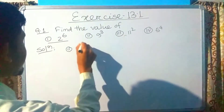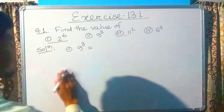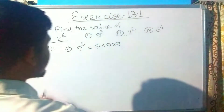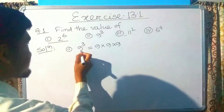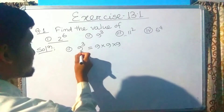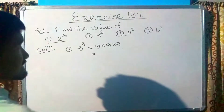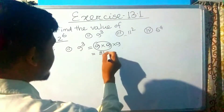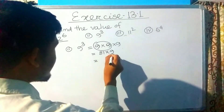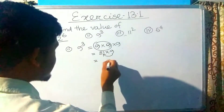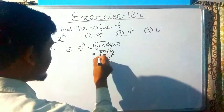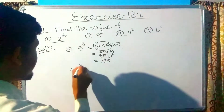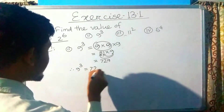Number 2 is 9 cubed. 9 cubed means 9 multiplied by 9 multiplied by 9. The power is 3 and the base is 9, so 9 will be multiplied 3 times. 9 multiplied by 9 is 81, and 81 multiplied by 9: 9×1=9, 9×8=72, so 9 cubed is equal to 729.